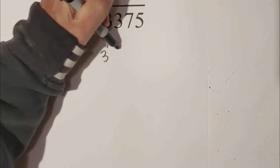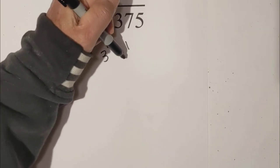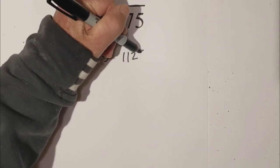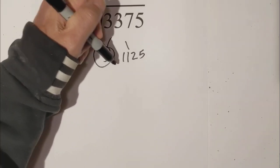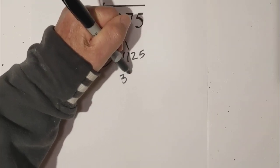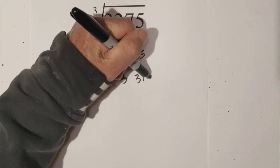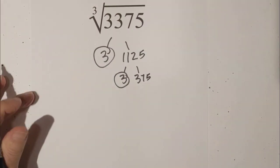I know that 3 goes into 3375, and that's 1125. Circle the 3 because it's prime, and now let's go 3 times 375. Circle the 3 again, it's prime.